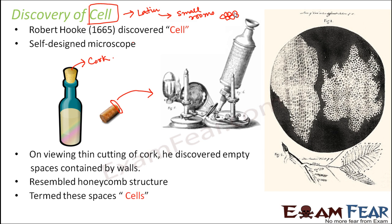This is how the cell was discovered. The spaces observed by Robert Hooke were termed 'cells.' Quite interesting — this work of microscopical studies was originally assigned to Sir Christopher Wren, who handed it over to Robert Hooke, and Hooke ended up discovering the cell.